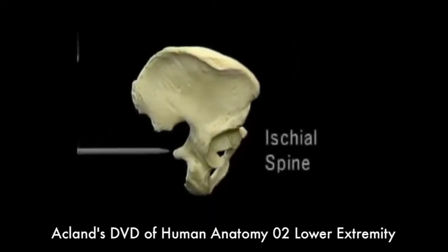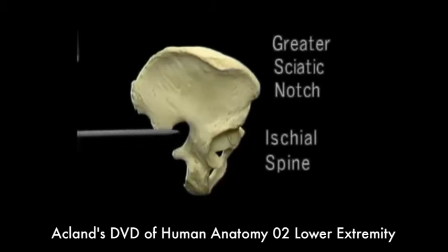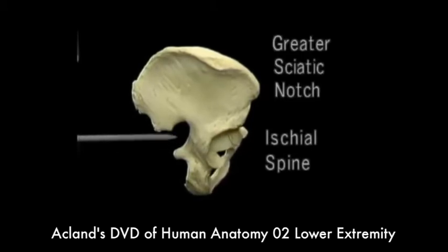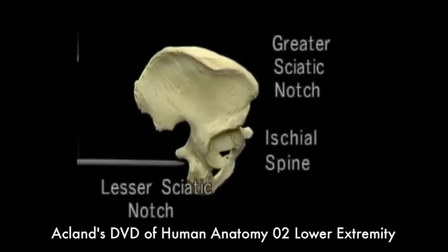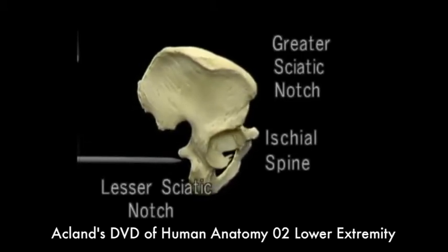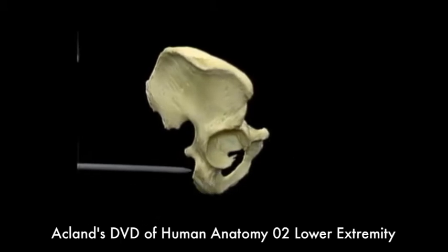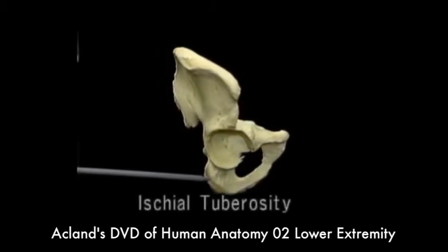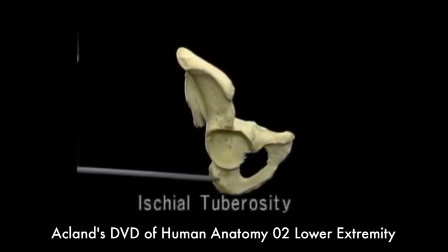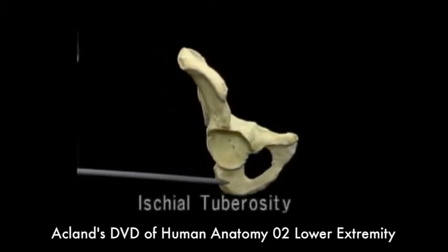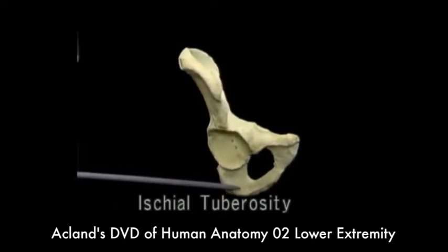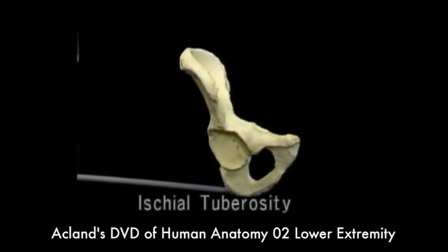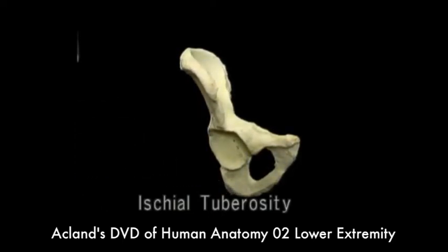This is the ischial spine, with the greater sciatic notch above it and the lesser sciatic notch below it. This is the ischial tuberosity. The ischial tuberosity is another area where many muscles attach. It's also the part of the hip bone that we sit on.